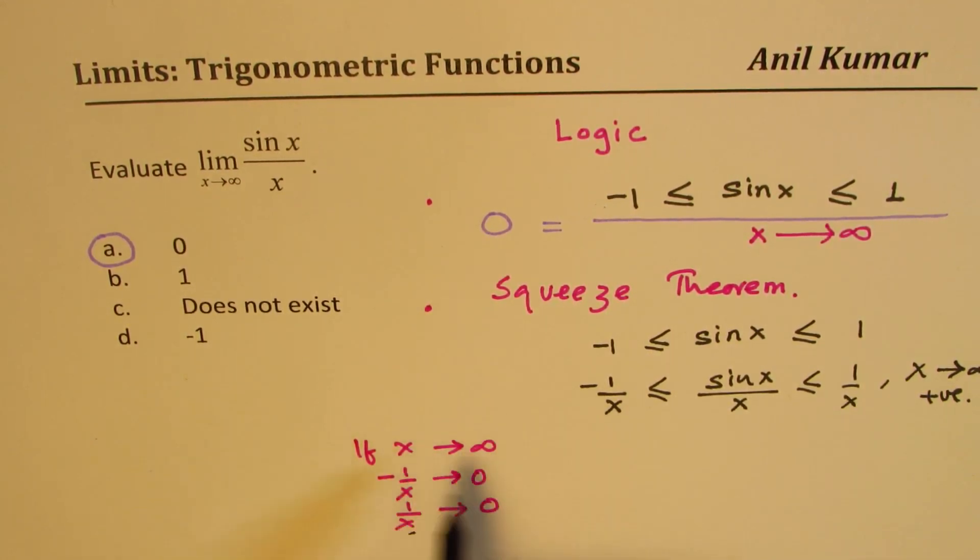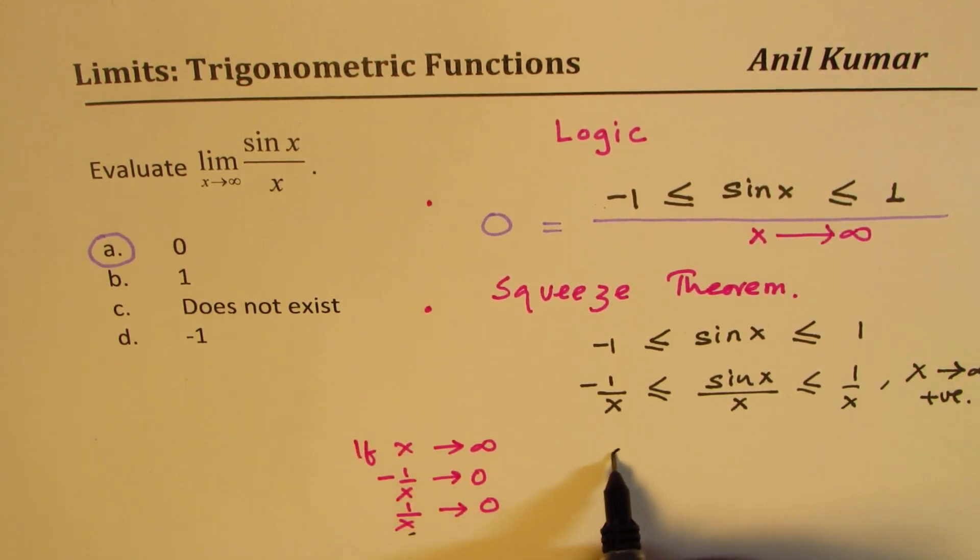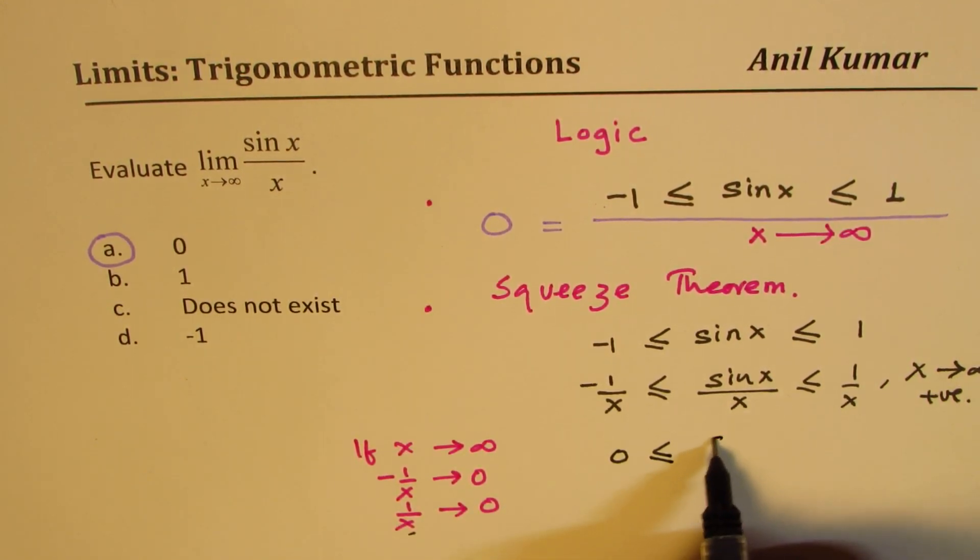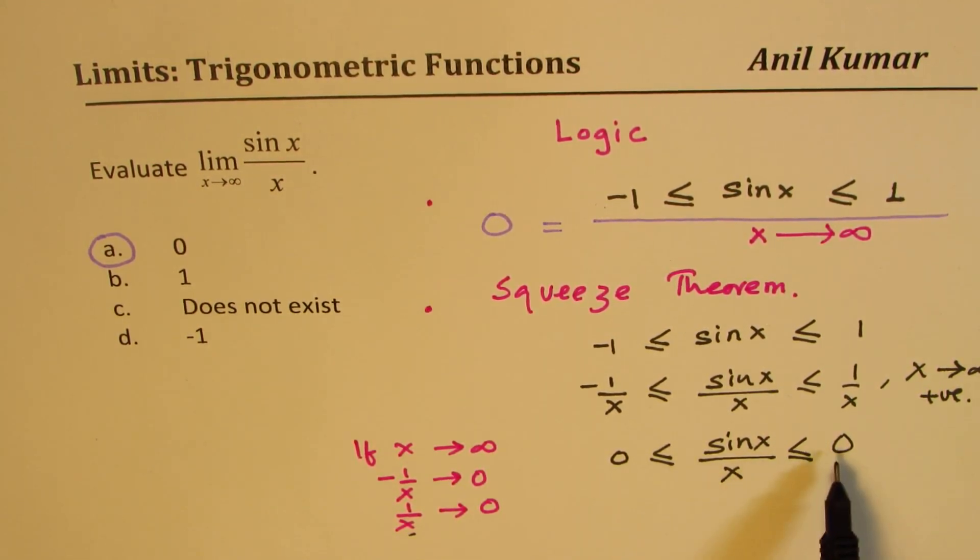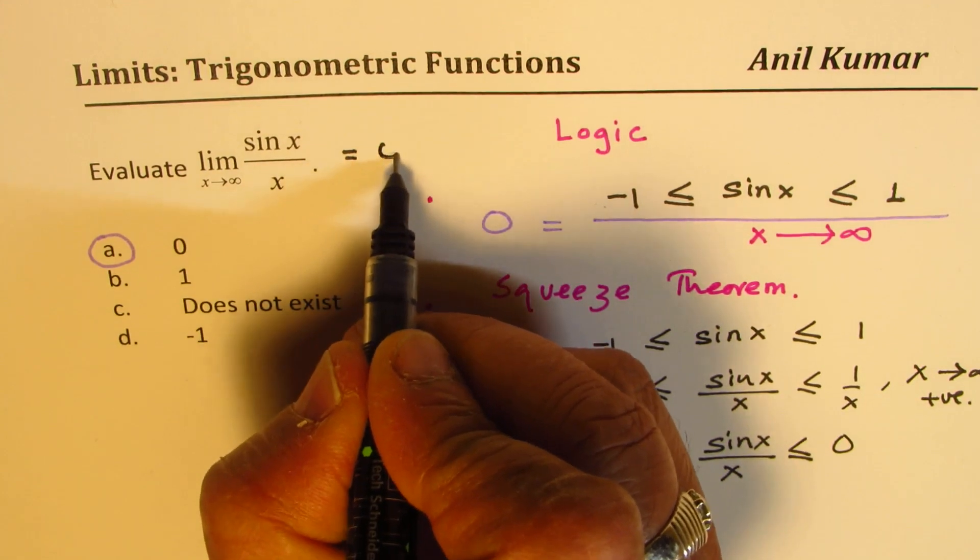So what do we get? For the given condition when x is very large, we get that this value of sin(x)/x is between 0 and 0. So there could be nothing else between 0 and 0 except for 0 itself, and therefore this limit should be equal to 0.